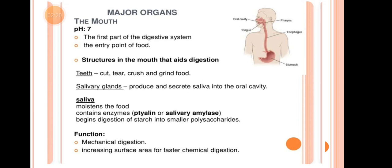Next are the Major Organs. First is the Mouth — the first part of the digestive system, the entry point of food. The structures in the mouth that aid digestion include the teeth, which cut, tear, crush, and grind food. The salivary glands produce and secrete saliva into the oral cavity.